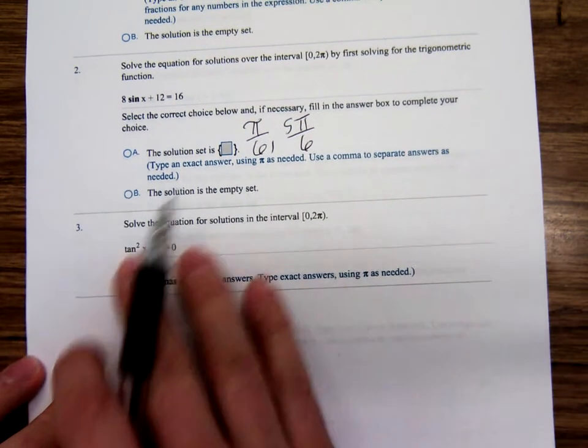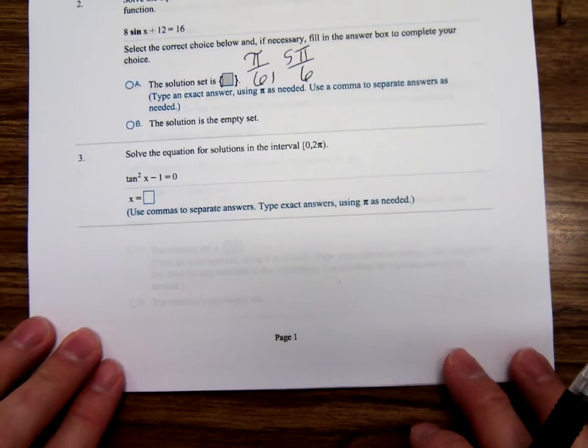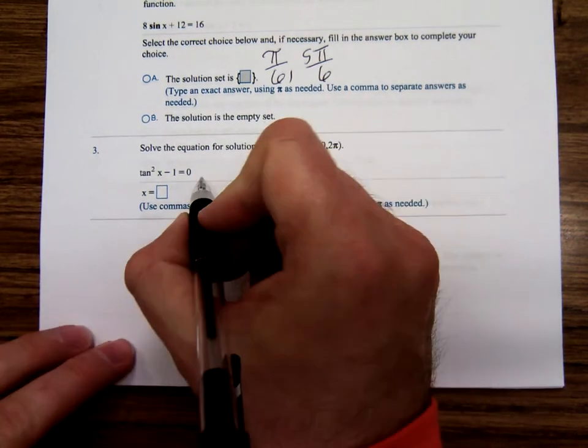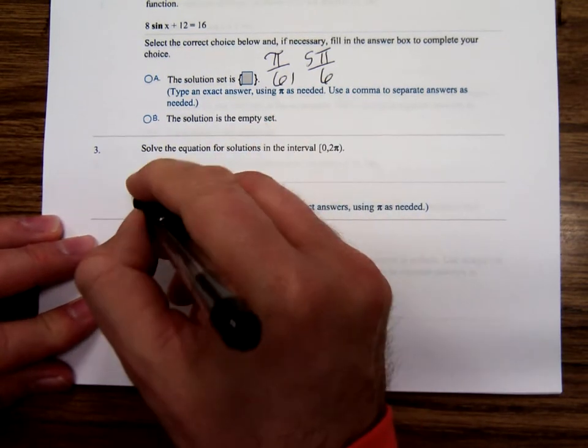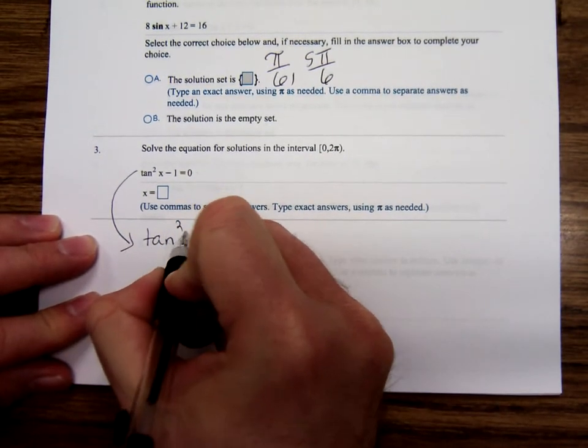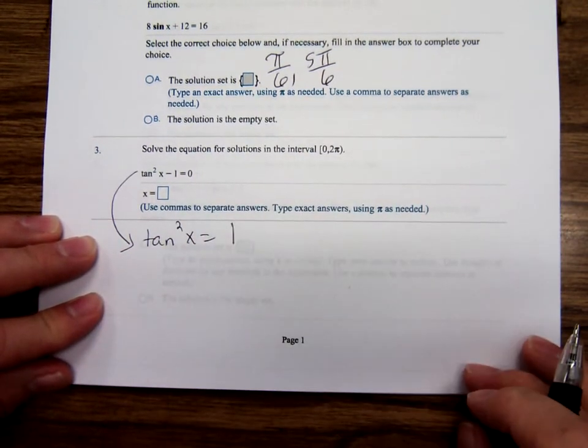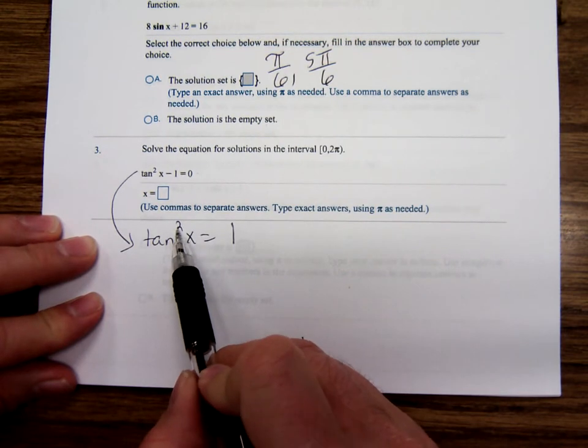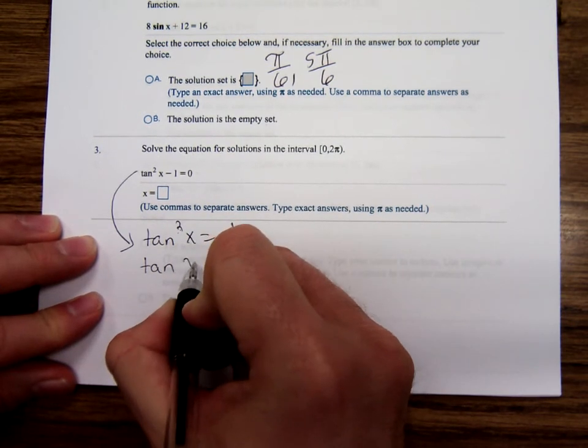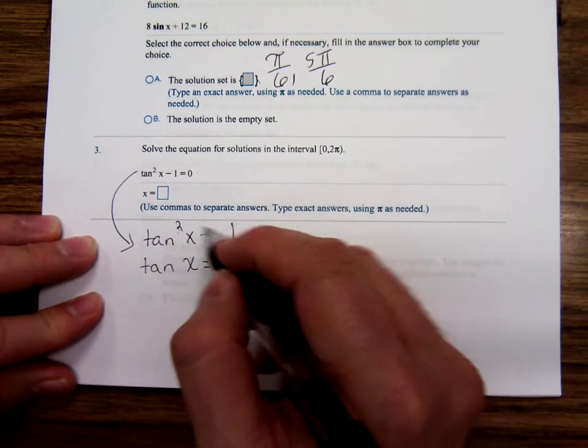Number 3. Tangent squared x minus 1 equals 0. You could get the tangent squared x by itself by moving the 1 over. And then to undo that square, what would we have to do? What cancels out a square? Square root.